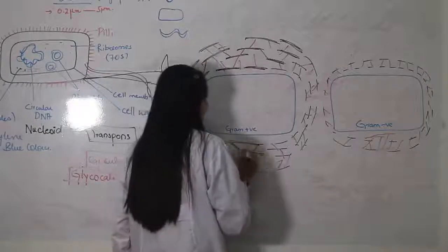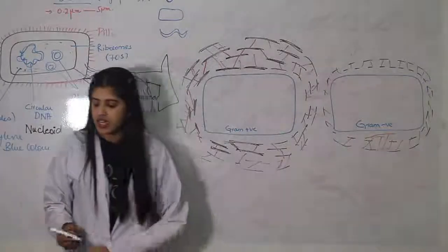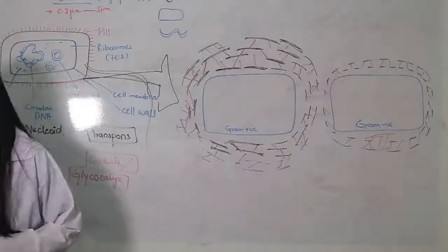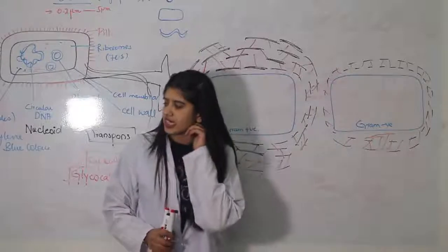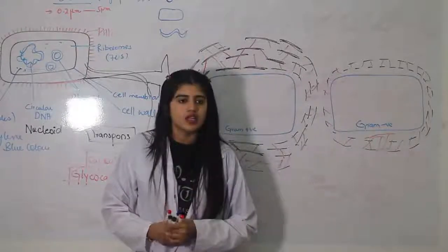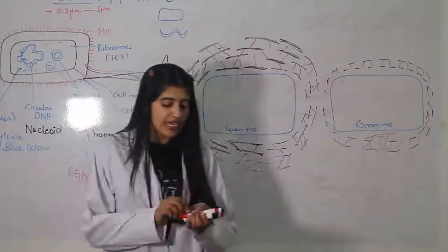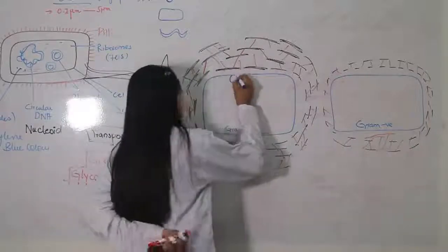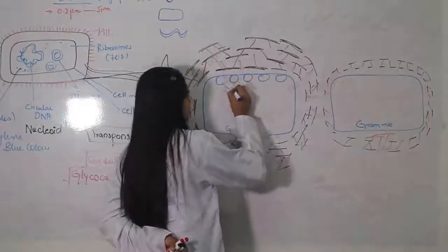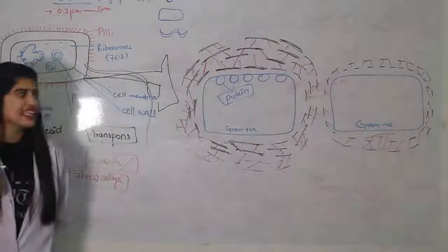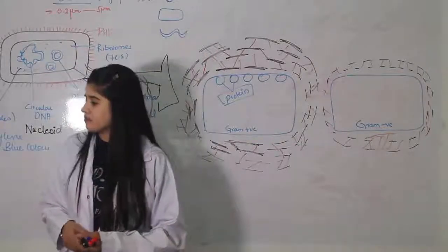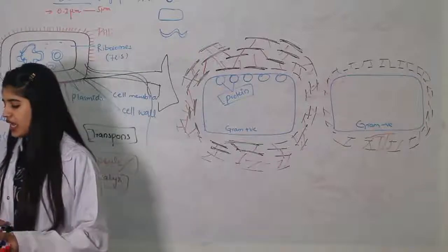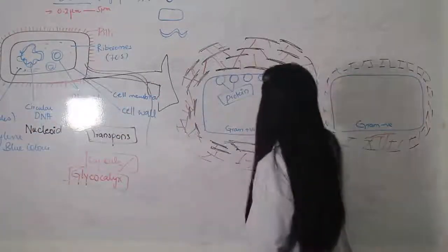Gram positive bacteria can stain; gram negative generally cannot. Now, how does bacteria get energy? They don't have mitochondria. Instead, they have protein particles on the inside of the cell membrane — these energy production proteins on the cytoplasmic membrane provide them energy.